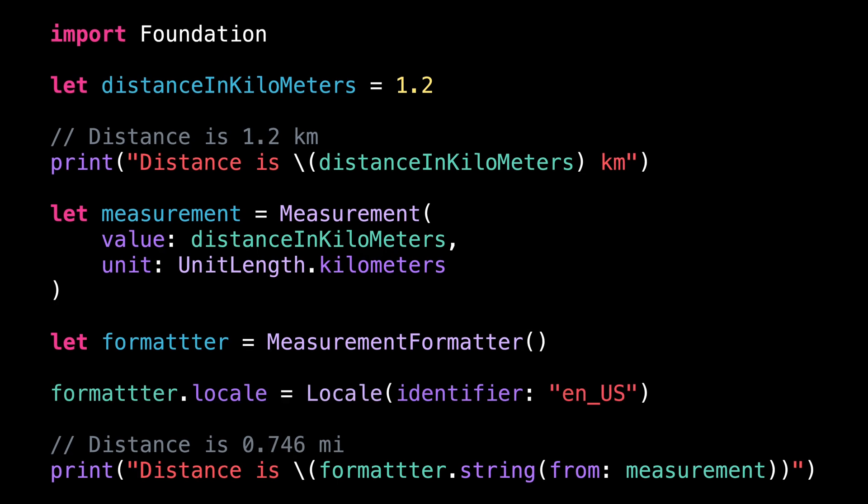And now, if I manually set the locale to American English, we can see some changes. First, the decimal separator went back to being a point, but more importantly, the distance has automatically been converted from kilometers to miles.